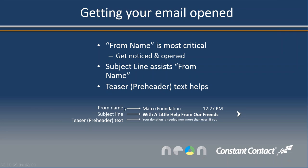We can see an example of the from name right here at the top — Matco Foundation. Most people are going to pay attention to that and then maybe read the subject line. The next most important part of a subject line is something called preheader text — that's a little bit of text, usually the first sentence of an email. If you think about your own phone's inbox, you're probably reading that first sentence to decide whether the email is important or not. A tool like Constant Contact actually allows you to craft that text outside of your email and use it as bait.